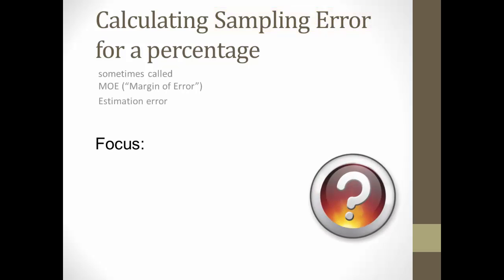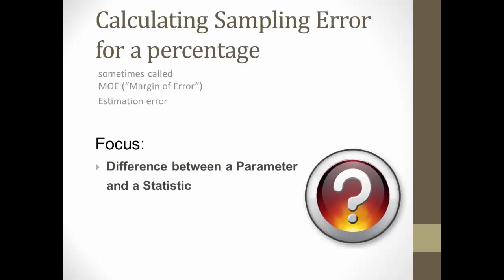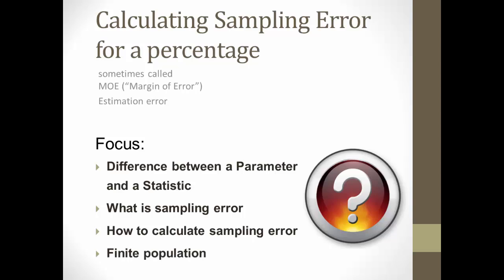This video begins with a reminder of the difference between a parameter and a statistic, then discusses what sampling error is and isn't, and then we'll focus on how to actually calculate sampling error, including how to adjust for a finite population. You might want to have a calculator ready if you want to try some of this yourself.